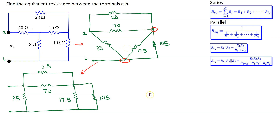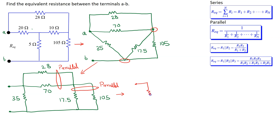This redrawn circuit now shows the advantage of using a Y-to-delta transformation. We can easily identify that these two resistors are in parallel, and similarly these two resistors are in parallel. Thus we can redraw this circuit, leaving the 35 ohm resistor as is, and replacing each parallel pair with an equivalent resistor.